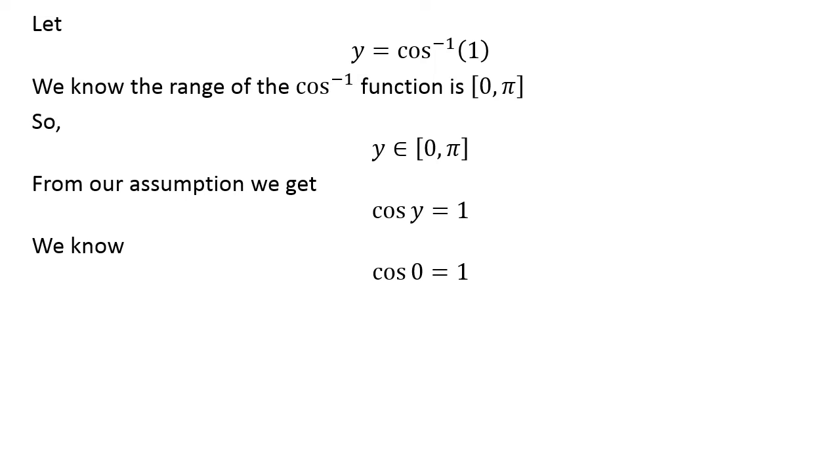We know cosine of 0 equals 1. As 0 lies in the closed interval [0, π], 0 is the principal value of inverse cosine of 1.